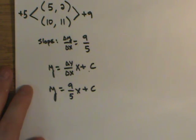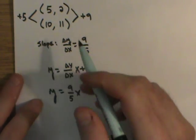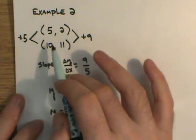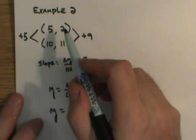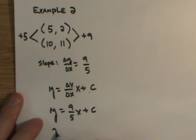Next, we want to plug a point in. As you plug a point in, it doesn't matter which set you use, just pick a set and plug it in. I'm going to go with the 5, 2 because the numbers are a little smaller. That means I put the 2 in for the y and the 5 in for the x.